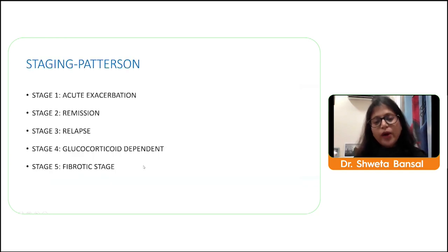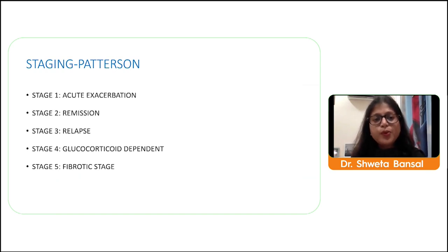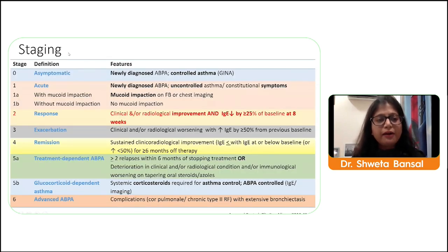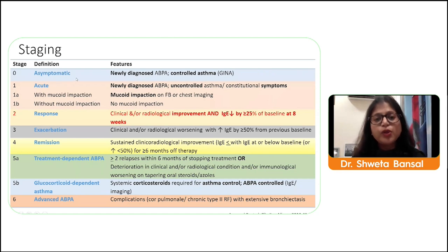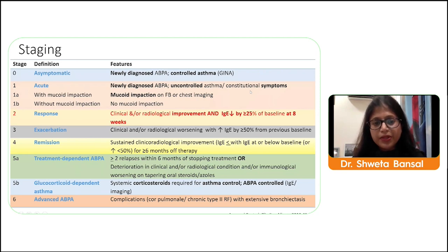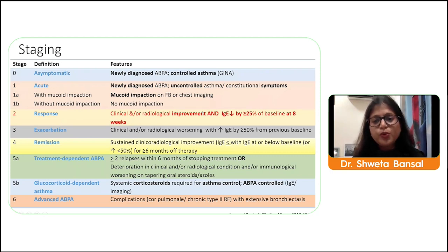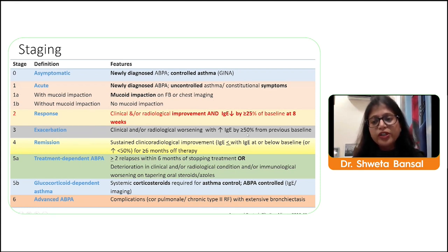Once diagnosed, the patient must be staged. Earlier Peterson staging had five stages but was very subjective. The latest ISHAM recommendations include six stages: Stage 0 is asymptomatic with newly diagnosed but controlled asthma; Stage 1 is acute with uncontrolled asthma and constitutional symptoms — 1a with mucus impaction, 1b without; Stage 2 is response with clinical and radiological improvement and IgE fall more than 25 percent; Stage 3 is exacerbation with worsening and IgE rise more than 50 percent from baseline.